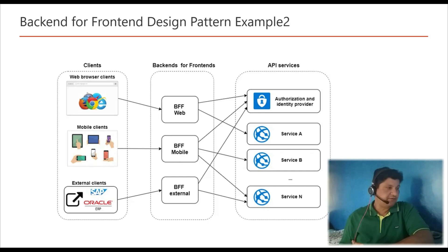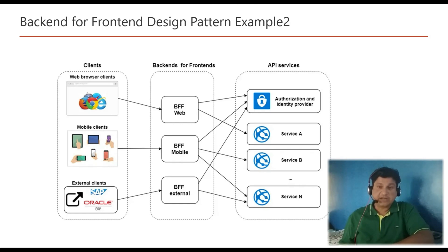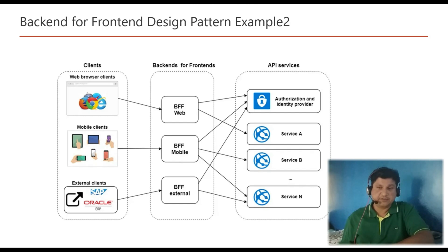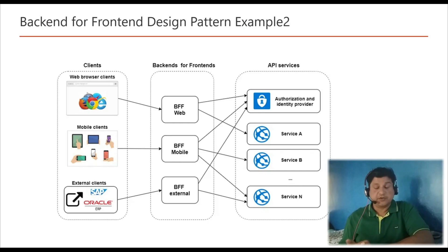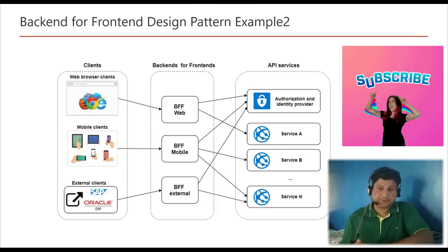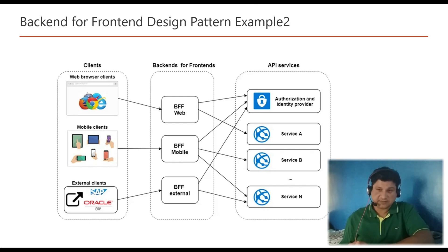In this example we have three different BFF layers — one for web, one for mobile, and one for external third parties. We can control the amount of data, the kind of data, and the format as per the client type and the frontend type. Different BFF layers can deliver data in different formats, and we can customize what information we reveal to different clients. Using the BFF layer, we improve the performance and user experience by fetching only the information that is required and relevant for that interface, which also improves overall application performance.